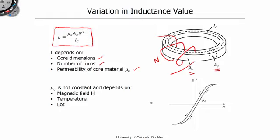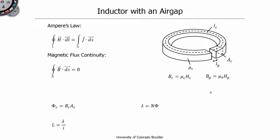Let's see if there's a better way to design our inductor with a more stable inductance. Here we have another design — very similar, except I've introduced an air gap into the toroidal core by essentially cutting a small piece out with a saw, creating a gap of length l_g. We again wind N turns around this core and proceed to find its inductance.